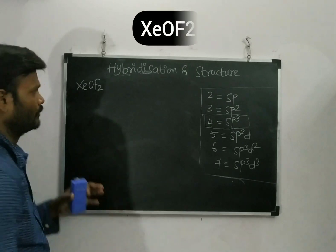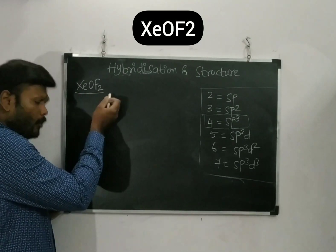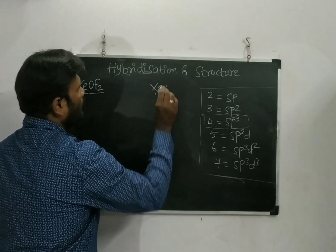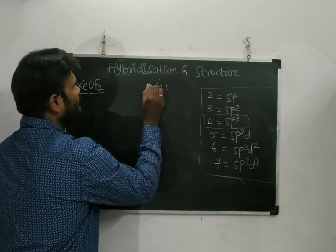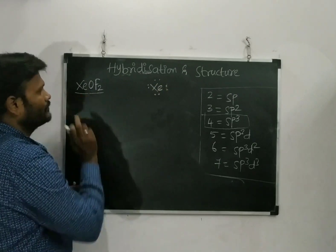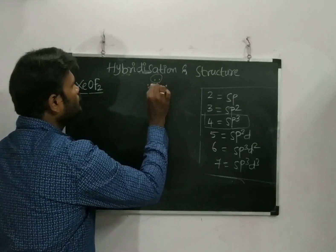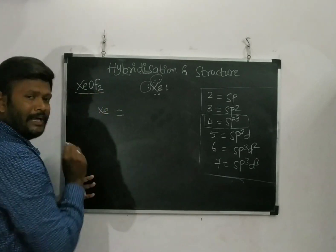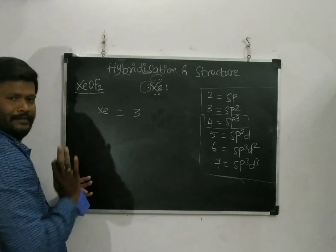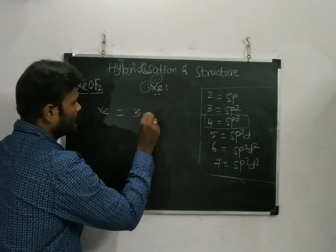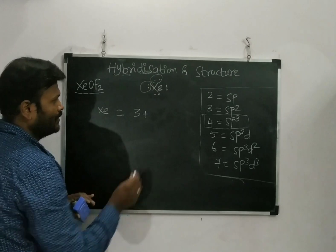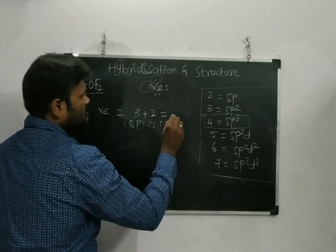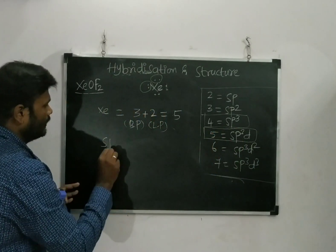The next compound is xenon oxydifluoride, XeOF2. Fluorine is monovalent and oxygen is divalent. Xenon has eight electrons on its valence shell. Fluorine takes up two electrons and oxygen takes up two more. The remaining four electrons form two lone pairs. So totally three atoms are attached to xenon — two fluorines and one oxygen — and two lone pairs exist. The total (bond pairs + lone pairs) is five, giving SP3D hybridization.